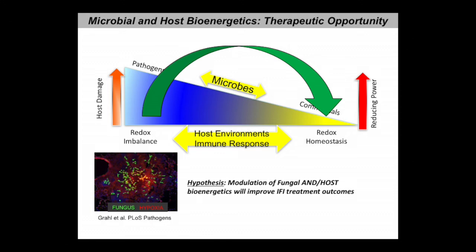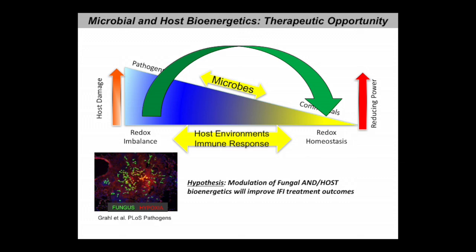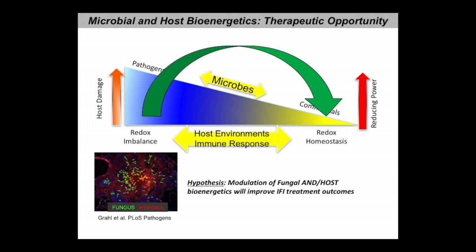The take-home message is that by manipulating the host redox environment we can really affect the physiology of the fungus and maybe even the host to improve treatment outcomes. Whether it's oxygen, iron, or some other aspect of the infection microenvironment, I think there's a real therapeutic opportunity here to manipulate the infection microenvironment to alter microbial virulence and host defense responses. Thank you again for the opportunity to tell you about what we're doing in the laboratory.